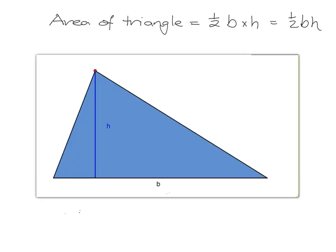The area of a triangle is half base times height. We can write that as half bh in maths, because if we leave out the multiplication sign we just mean it's a multiplication — so half bh, half base times height.